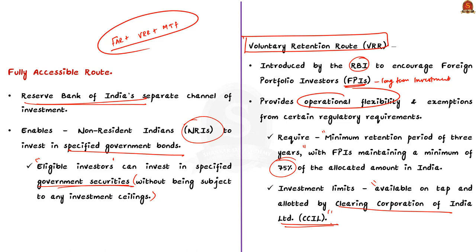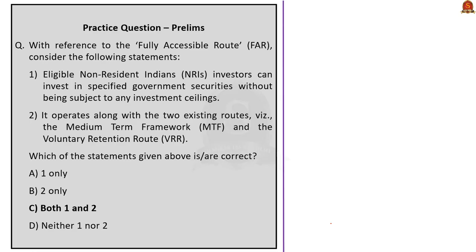With this basic idea, now let's go back and solve this question. The first statement: eligible NRIs can invest in specified government securities without being subject to any kind of investment ceilings — this is correct as we have seen in our discussion about FAR. The second statement: it operates alongside two existing routes of MTF and VRR — this is also correct. So both the statements are correct, and the correct option is option C.